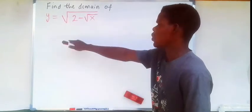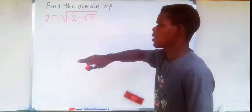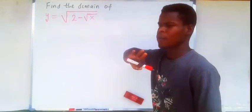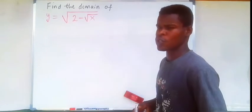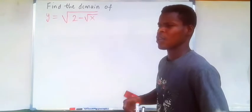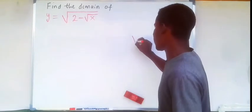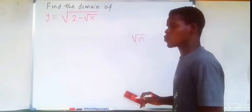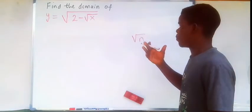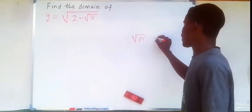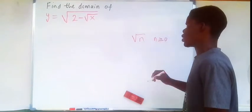Note that we have a square root here and a square root inside. The square root of a number requires that the number — the radicand — must be greater than or equal to 0 for the expression to be defined on the set of real numbers. So for square root of n, the expression is valid only if n is greater than or equal to 0.